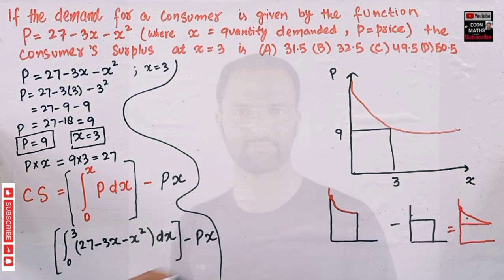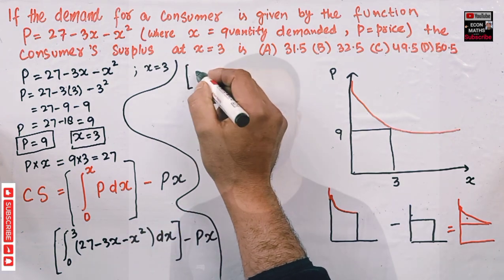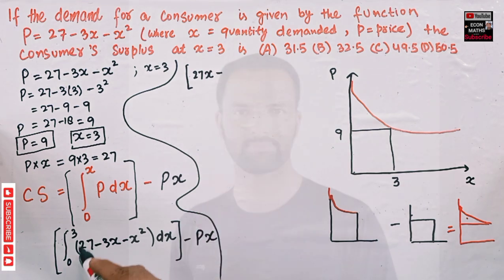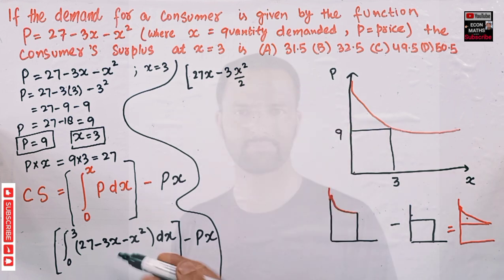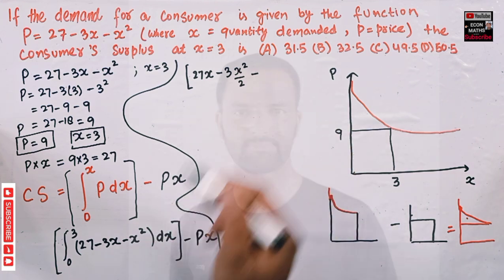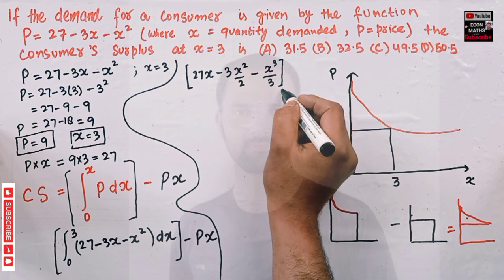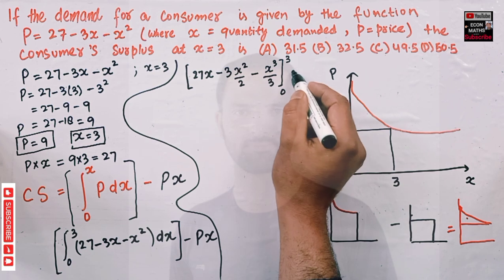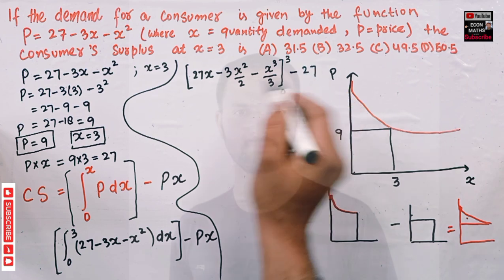The integral of 27 with respect to x is 27x. The integral of 3x uses the power rule: integral of x is x²/2, so we get 3x²/2. The integral of x² is x³/3. Evaluating from 0 to 3, we have [27x - 3x²/2 - x³/3] from 0 to 3, minus the total expenditure of 27.